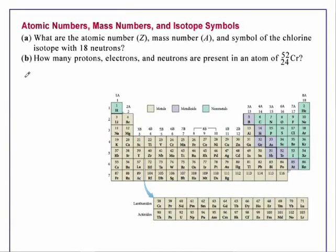Atomic numbers, mass numbers, and isotope symbols. Part a: What are the atomic number Z, mass number A, and symbol of the chlorine isotope with 18 neutrons?